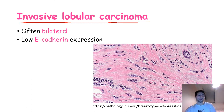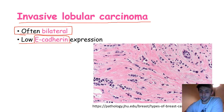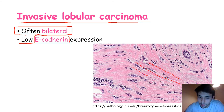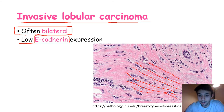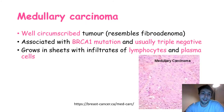Invasive lobular carcinoma also carries increased risk in both breasts, so if found in one breast, the other should be examined as well. It is also caused by decreased expression of E-cadherin. On histology, it almost looks like there's a single file of cells — one on top of another — which appears surprisingly organized for an invasive carcinoma. It's recommended to look at more images to become familiar with the histological appearance.